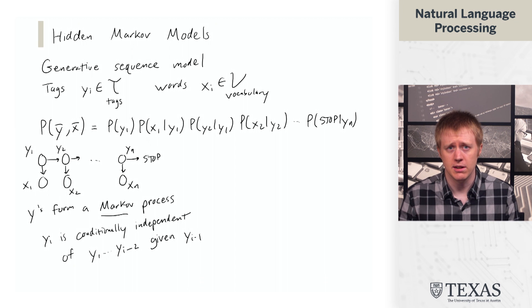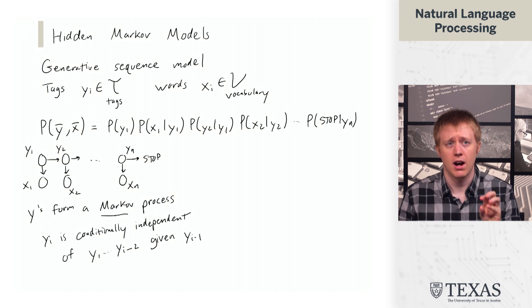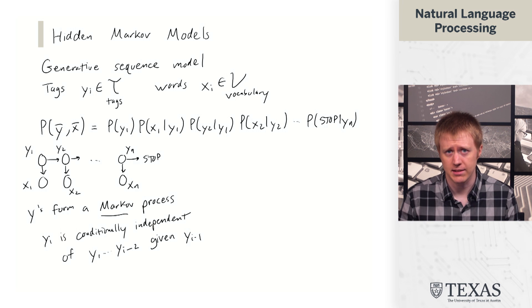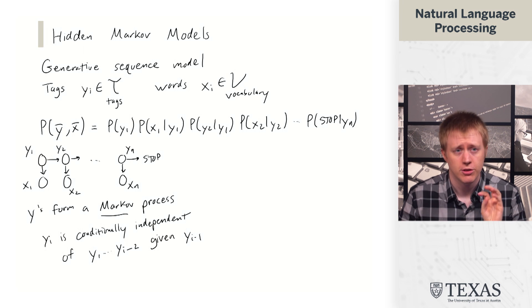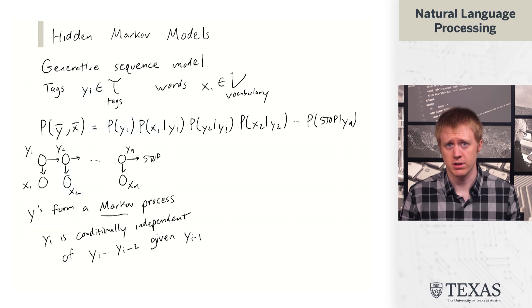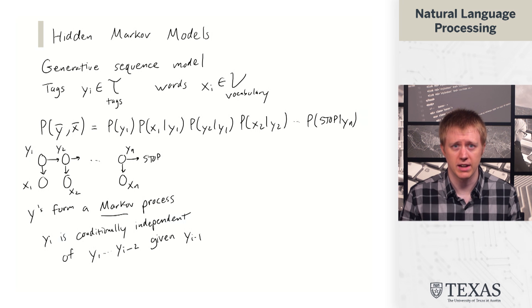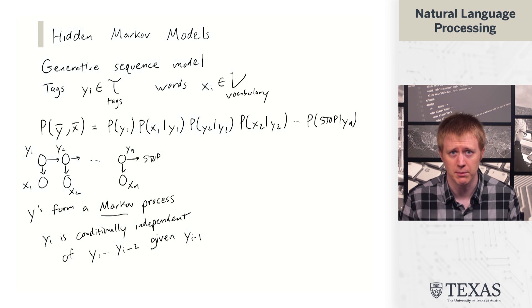And then the other assumption here is that the words are conditionally independent of each other, given the tags. So x2 doesn't depend on x1, but instead is only going to depend on y2. So this is not necessarily a good assumption, because if we have x1 and x2 as, for example, New York, the fact that we have a kind of proper noun phrase, or maybe San Francisco is a slightly better example.